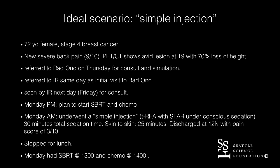72-year-old female, stage 4 breast cancer, new severe back pain — 9 out of 10. PET CT shows an avid lesion at T9 with 70% loss of height. Referred to radiation oncology on Thursday for consultation and simulation. The radonc called me that same day and referred her to IR. The very next day, Friday, I saw her in clinic, looked at all the imaging, explained everything. Monday morning she showed up — the plan was to start SBRT and chemotherapy Monday afternoon. So on her way to radiation therapy and chemo, she stopped in our department Monday morning and underwent what she called a simple injection.